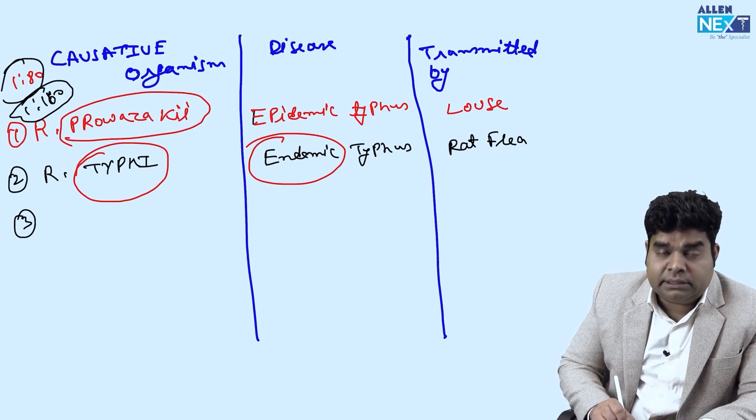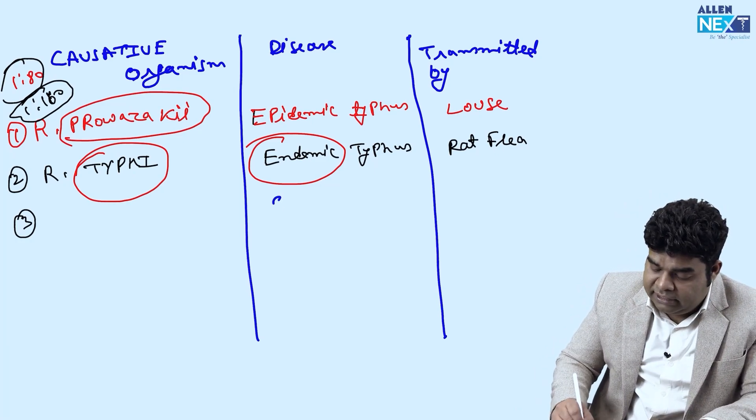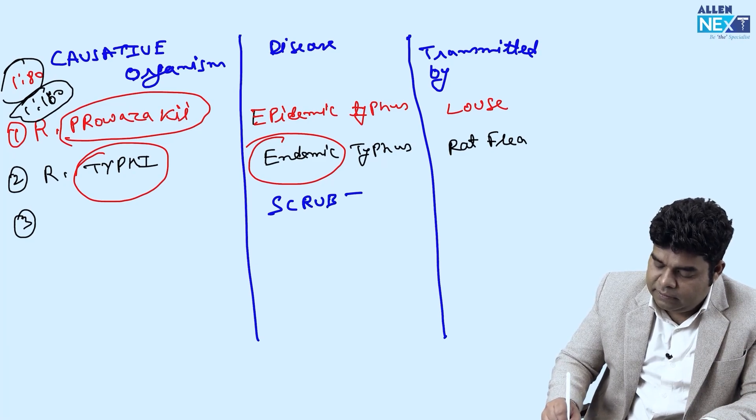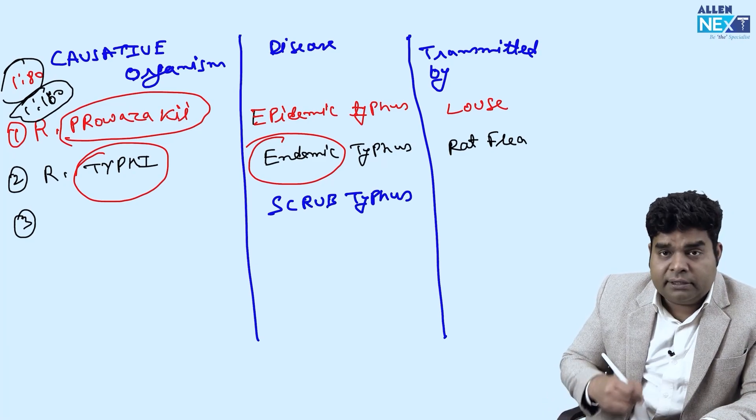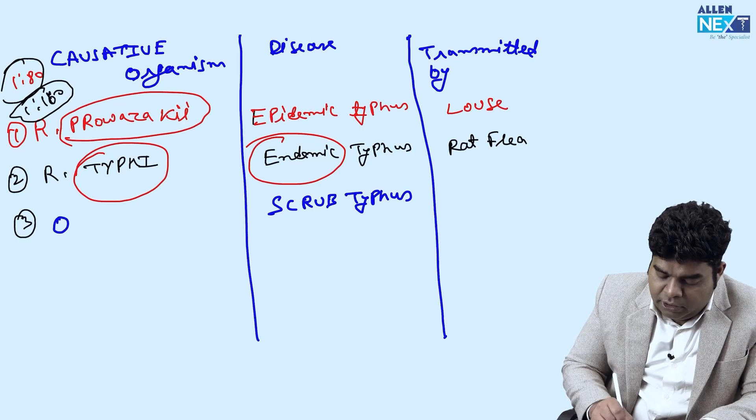Then, the third very commonly asked is name of the disease is scrub typhus. They ask who transmitted? Transmitted by Orienta.